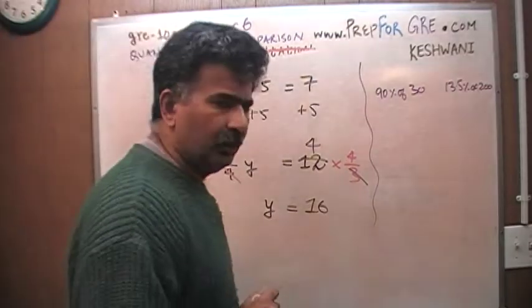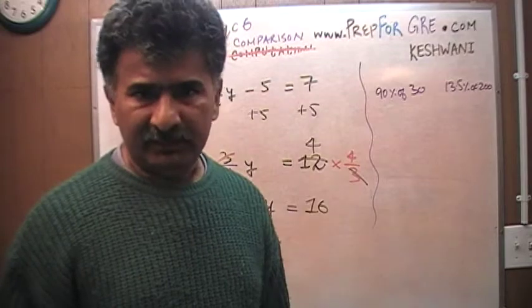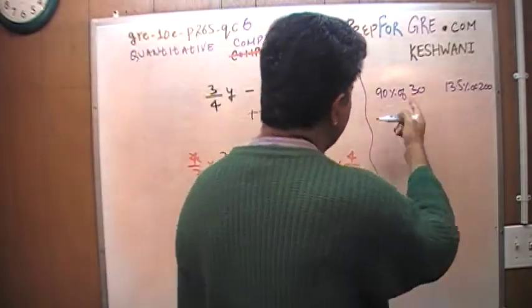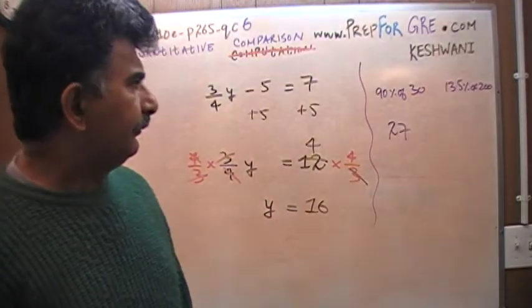And for crying out loud, don't sit there and go 30 times 0.9, it's pointless. Don't do that. What is 3 times 9? 3 times 9 is 27. So 90% of 30 is 27. There you go. That's all.